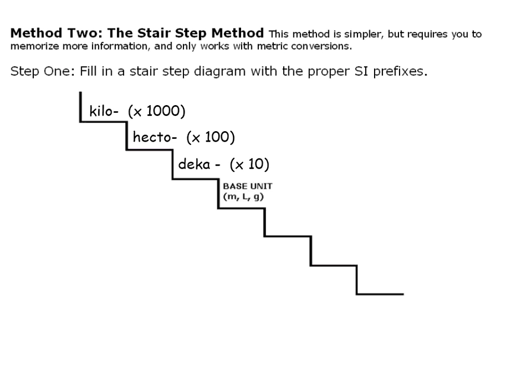Going the other direction, deci means 1 tenth of the base unit. Centi means 1 hundredth of the base unit. And milli means 1 thousandth. So what I mean by base unit would be any standard unit that you're going to use in the SI system, like meters, liters, grams.